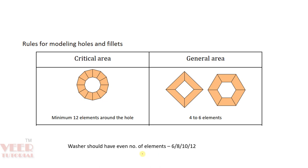For the washer, we have to make sure we put an even number of elements — for example, 6, 8, 12, etc. If we have a very critical area, meaning where stresses are high, we need to put a higher number of elements — at least 12 on the critical areas. In general areas, we can put 4 or 6 elements if the hole diameter is small, but the number of elements should always be even.